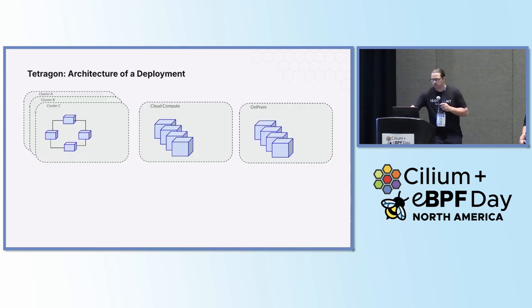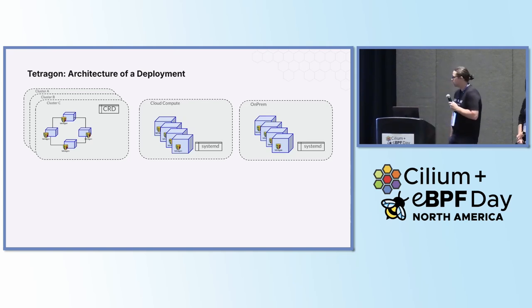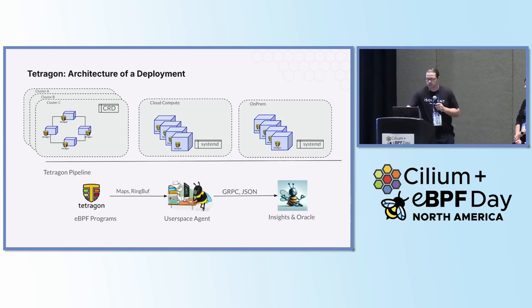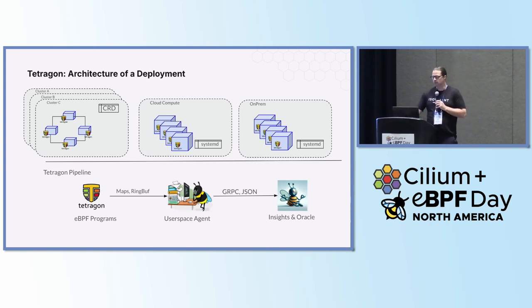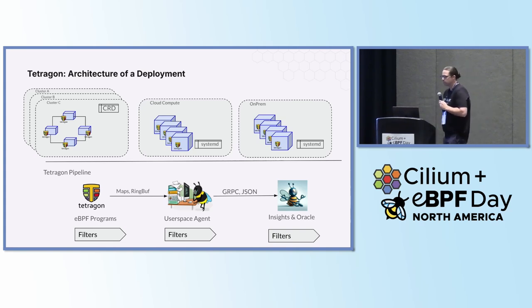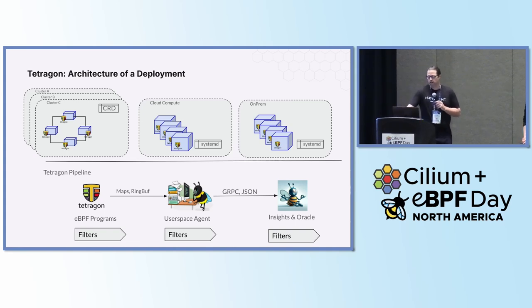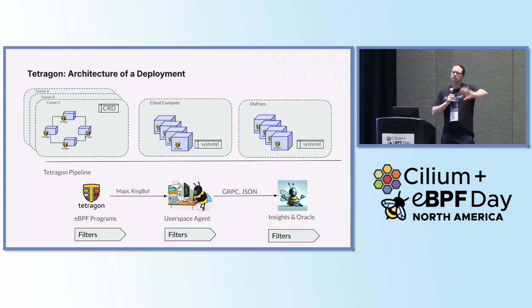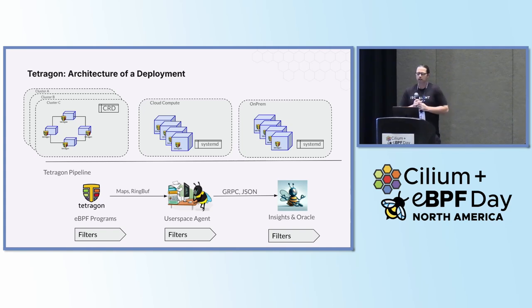The problem Natalia alluded to is that once you deploy this to your network — a bunch of clusters, cloud compute, and maybe some on-premises systems — you might have thousands and thousands of nodes running. If all of those nodes are generating every network connection and every file connection to build this model, you're going to have lots and lots of data. You can start filtering at different layers, but if you really want a model, you can't filter all the file operations — you want to see all the opens so you can build that model. Or you want to get all the network connections so you can build the network model. This is the converse of the known-bad model, where you can push bad behavior filters into the network.